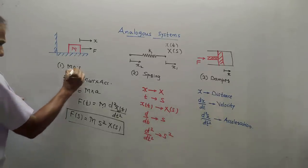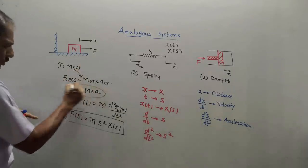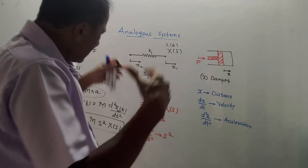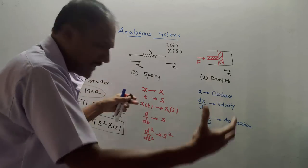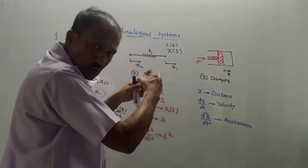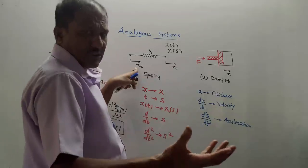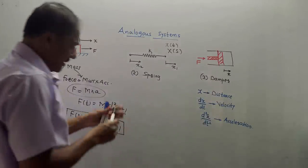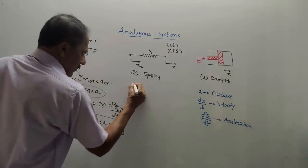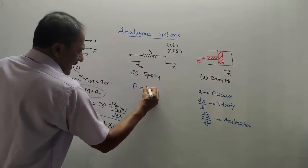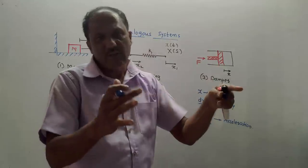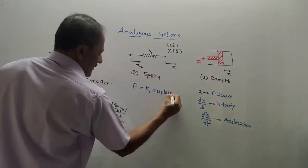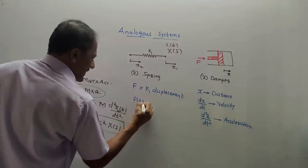The basic equation for mass: force equals mass into acceleration. Next is the spring. We know we can contract or expand a spring. If we want to expand it, we need to apply a force, which can cause displacements at the two ends — X1 and X2. In the case of a spring, the applied force F causes the displacement, so we write K — the spring constant, or the resistance provided by the spring — into displacement.